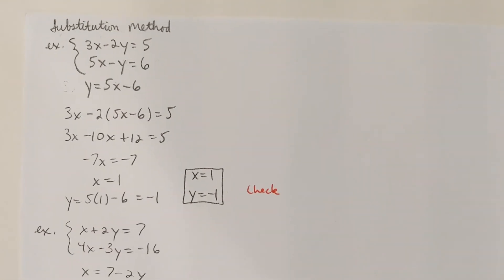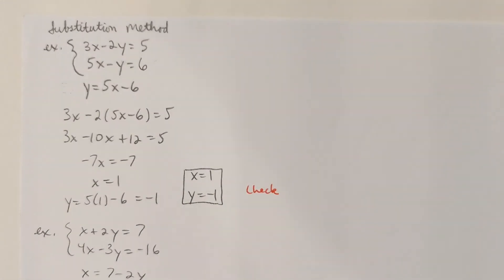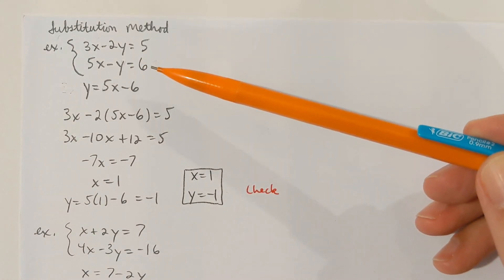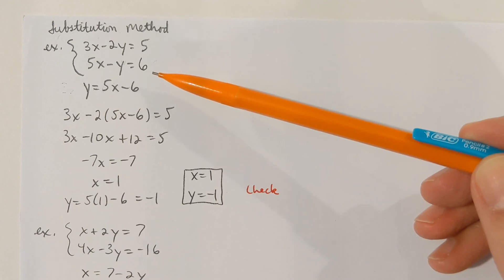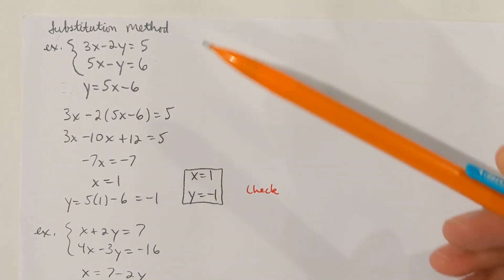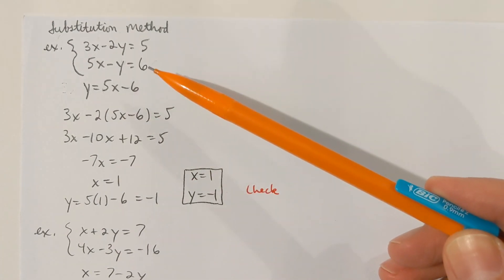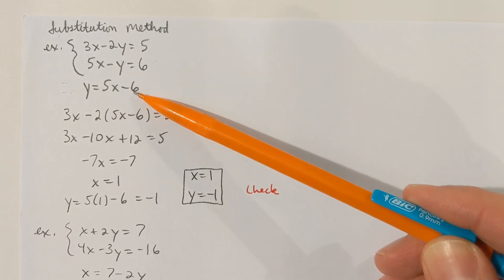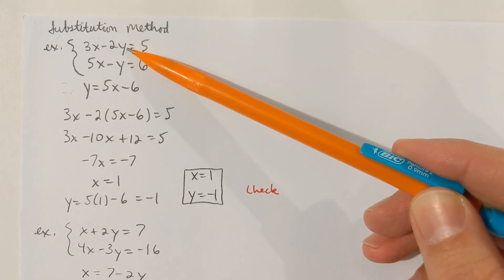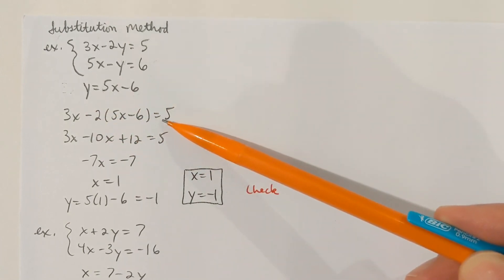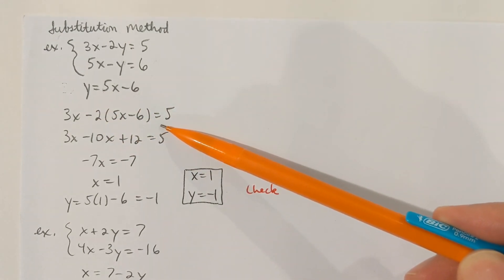The next method is called the substitution method. With the substitution method, you want to pick an equation and solve for one variable. It doesn't matter which equation or which variable — just pick one and solve. Then substitute that into the other equation for that variable. In this problem, I've chosen to solve the second equation for y. Now where I see y in the first equation, I'm going to replace that with 5x minus 6, so everything in the first equation is in terms of one variable.